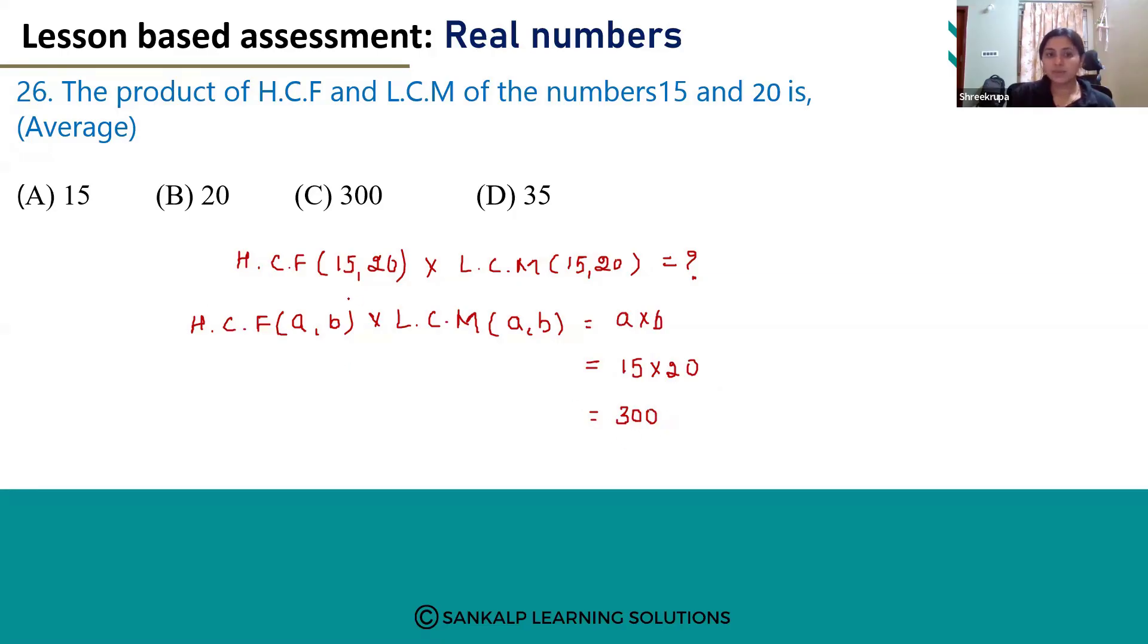That is, HCF of 15 and 20 multiplied by LCM of 15 and 20 will be 300. So the correct answer is option C, 300.